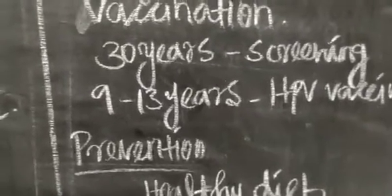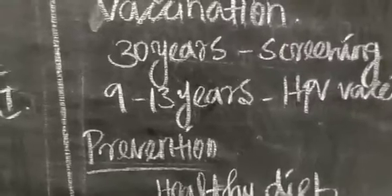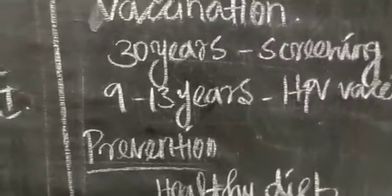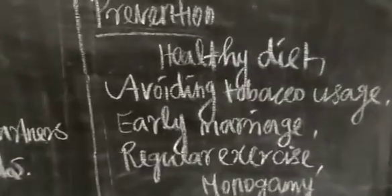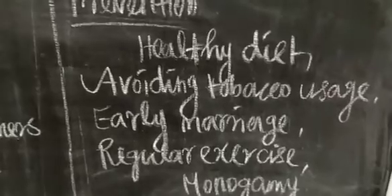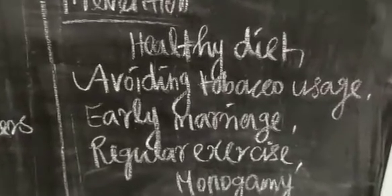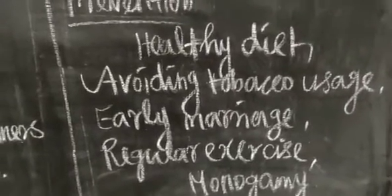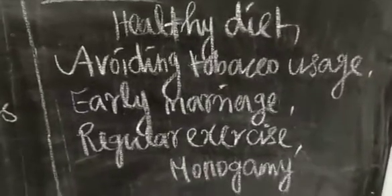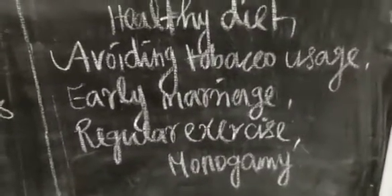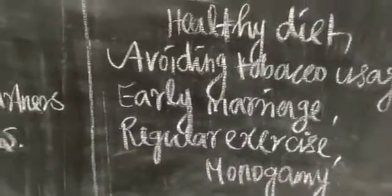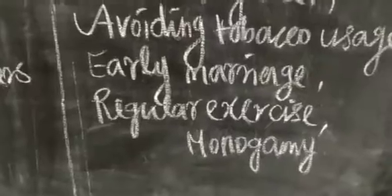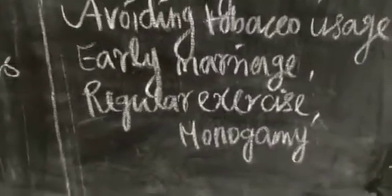Girls aged 9 to 13 years will be vaccinated. For prevention: maintain a healthy diet, avoid tobacco usage, avoid early marriage, do regular exercise, and practice monogamy. These are the key prevention strategies for cervical cancer.